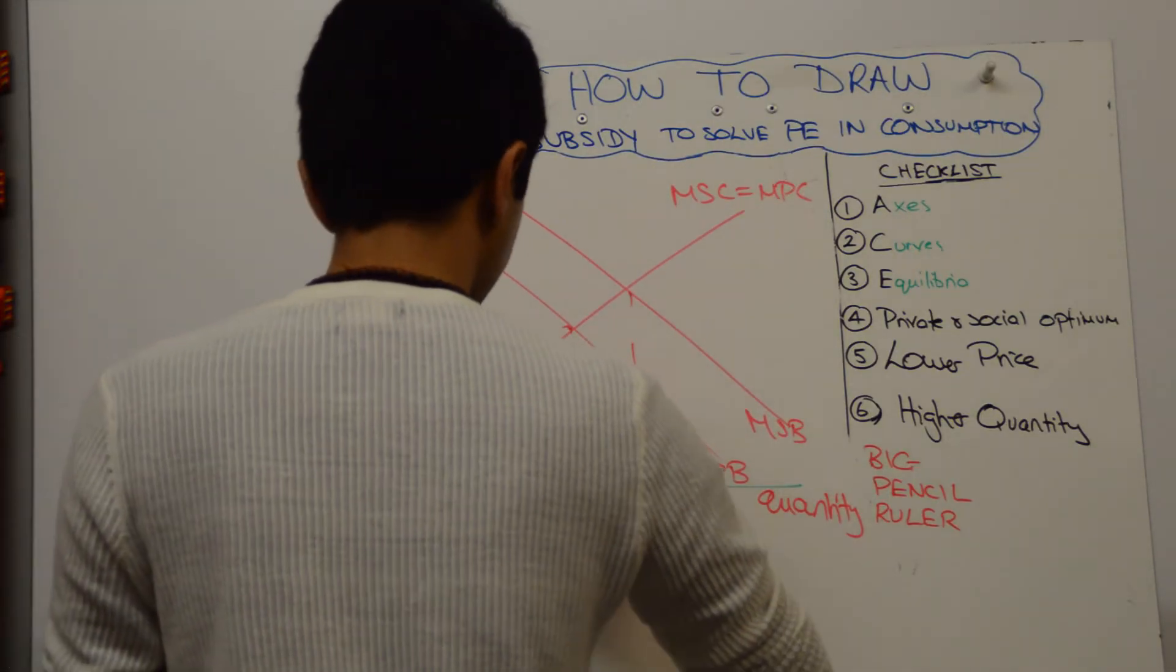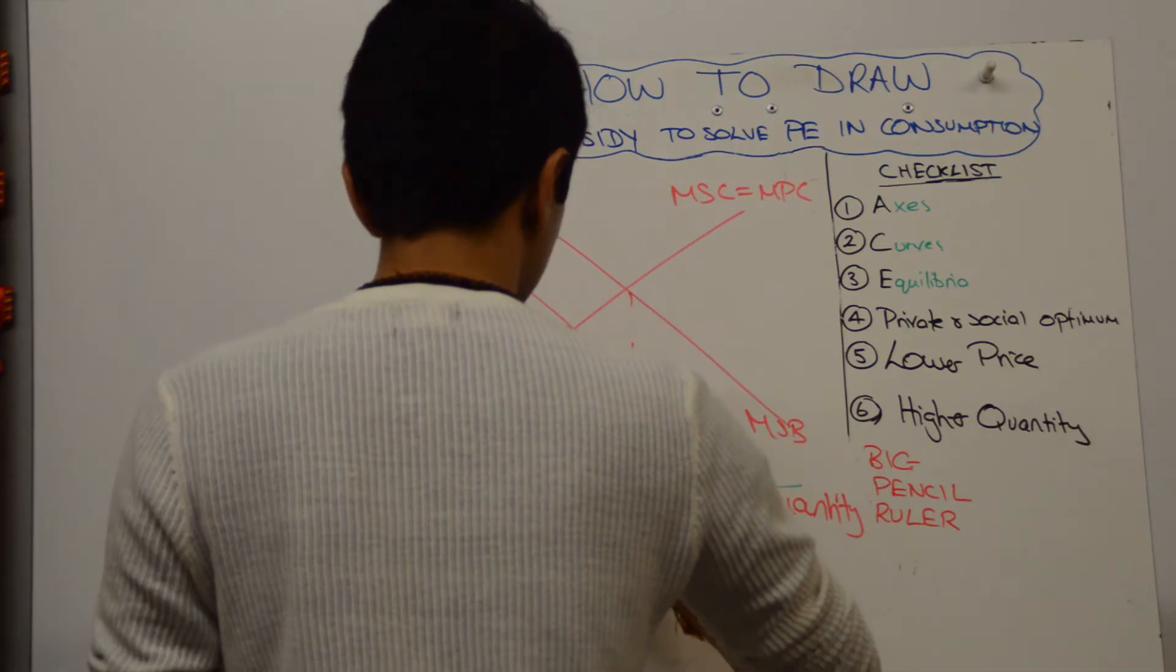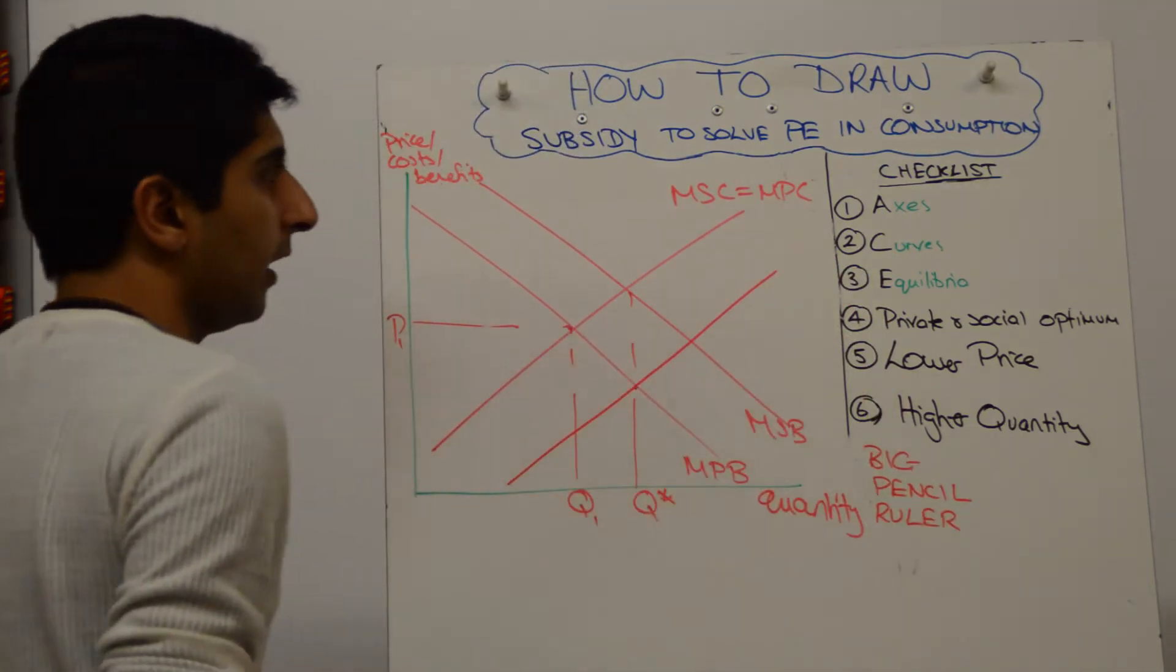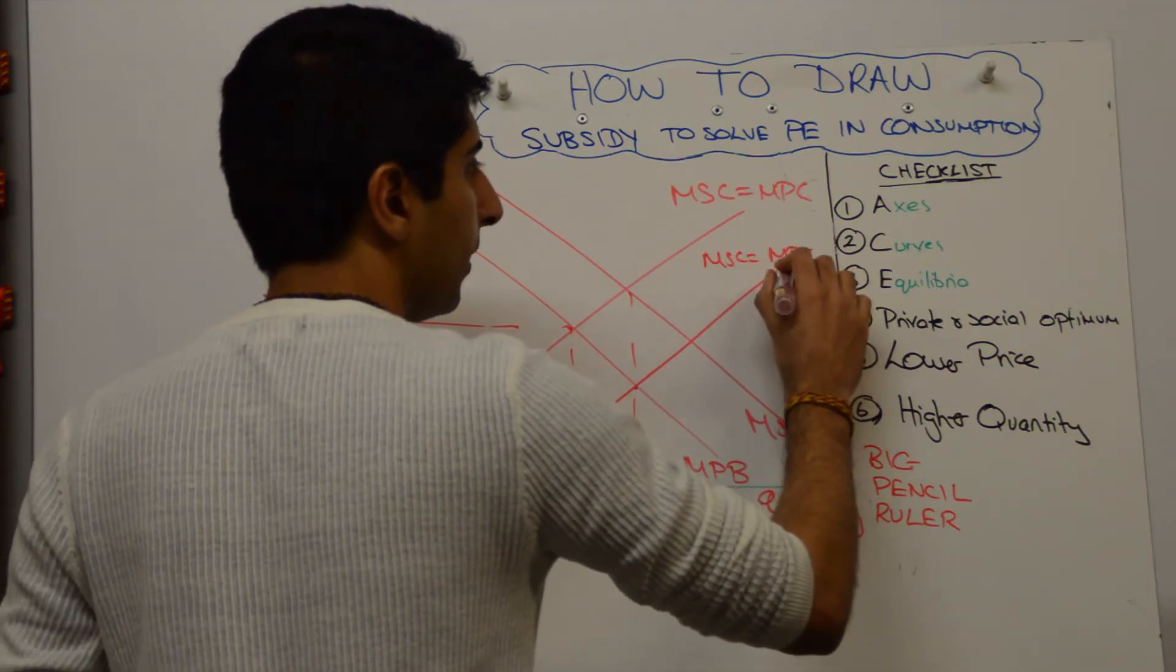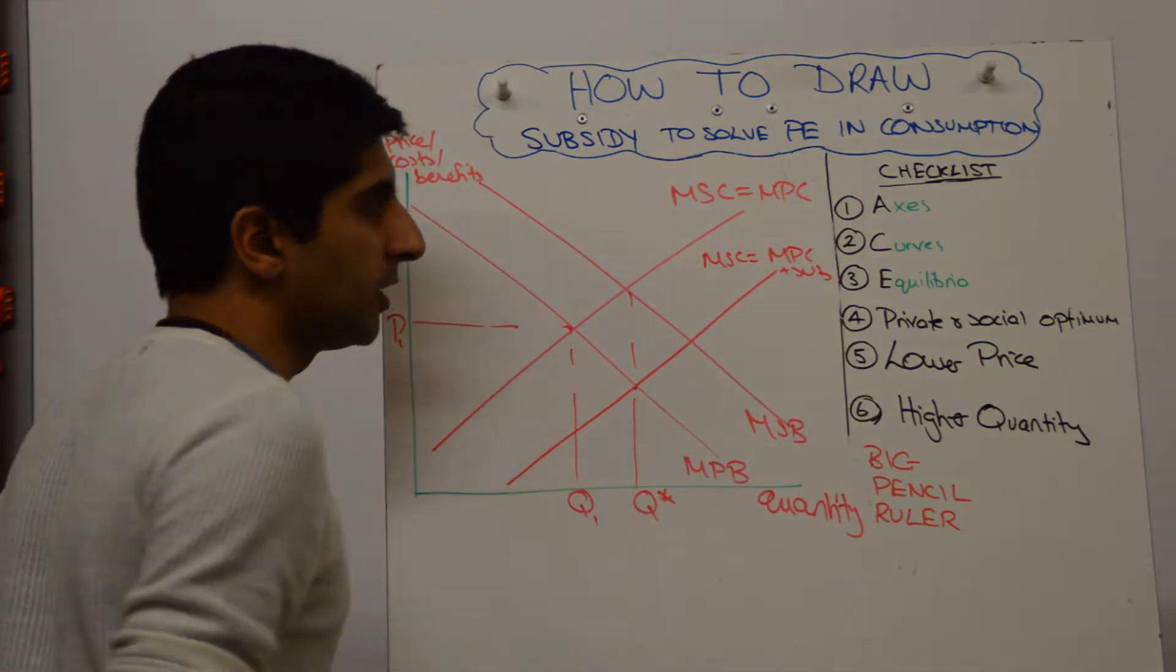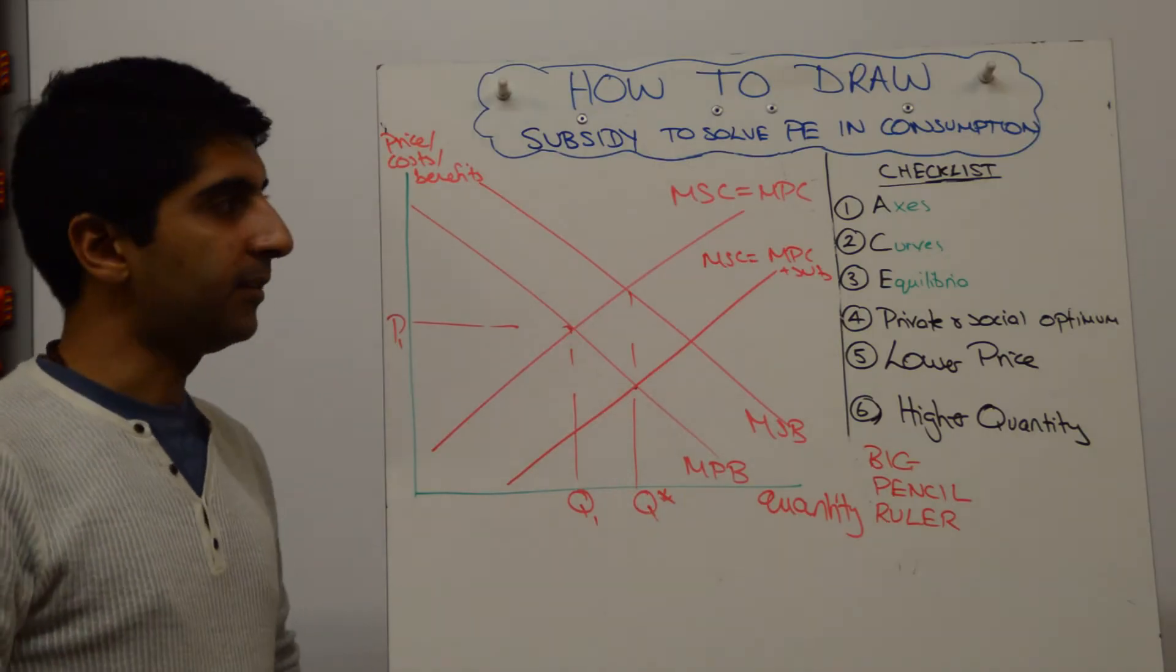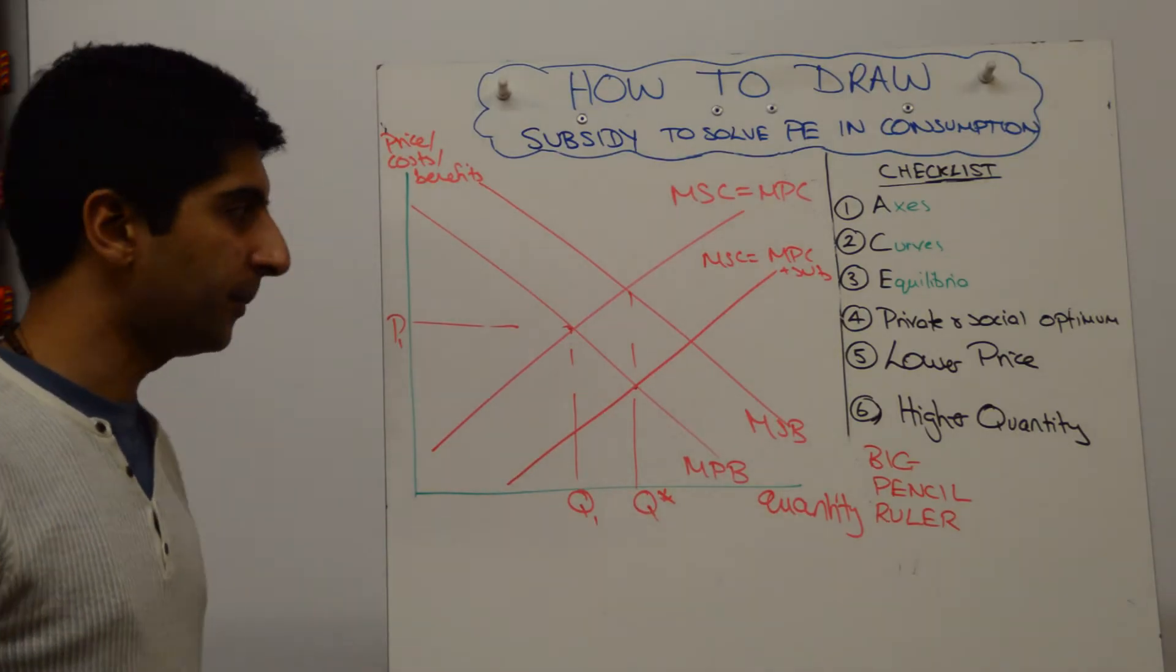With a ruler, it's very easy to do. The shift has got to be parallel, like that. Then you label it as MPC plus subsidy. This shows that you shifted the MPC curve downwards because of the subsidy.